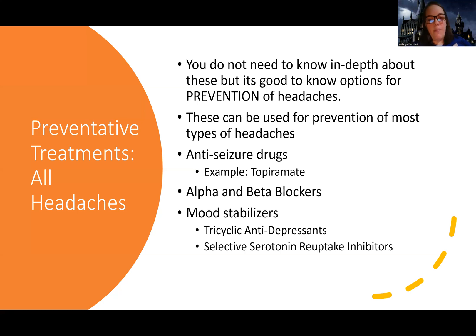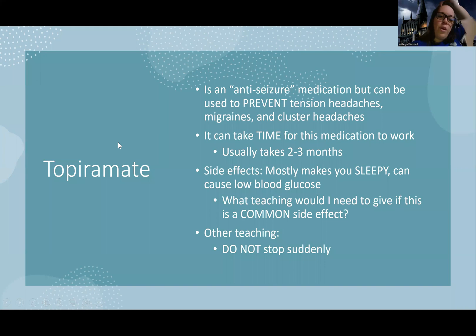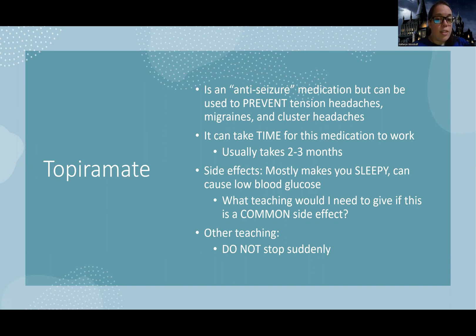Just keep in mind these are some possible preventatives. For topiramate, also known as Topamax, this is an anti-seizure medication but we also use it for tension headaches, migraines, and clusters. This is a prevention med, but it can take time to start working — like two to three months.